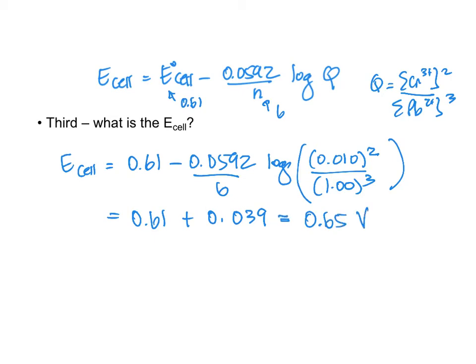And that makes logical sense. We have decreased the amount of the product. We decreased the Cr³⁺. We should have seen a shift to the right. And with that shift to the right, our 0.61 volts went up to 0.65 volts. So that is a very typical question you might see on a midterm.